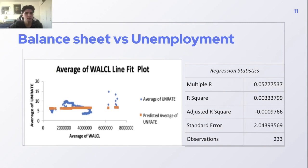Looking at balance sheet versus unemployment, we can see there's actually no correlation at all between expansionary monetary policy — printing money to purchase financial assets — and lowering unemployment. Why that mechanism would work is difficult to understand. It's difficult to argue why we would be doing expansionary monetary policy in the sense of raising the balance sheet, as it seems to have very little effect on the actual unemployment rate.